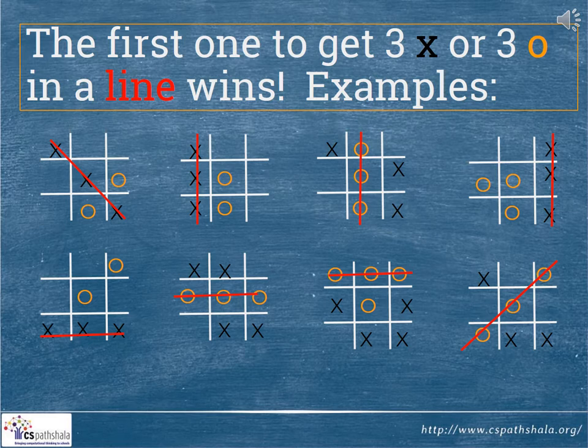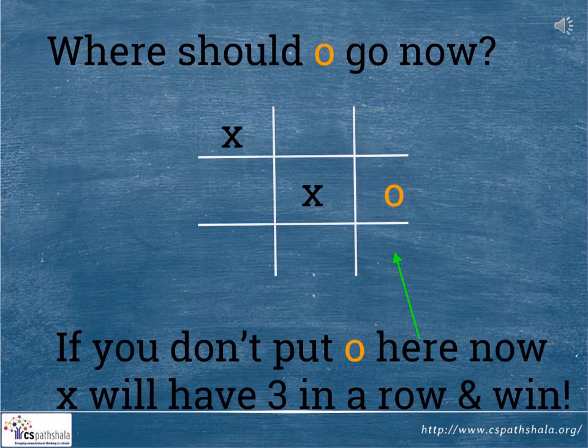Take a close look at the slide. The first one to get 3 crosses or 3 knots in a line wins — see the examples. Where should the knot go now? If you don't put the knot in the right bottom corner, 3 crosses will be in a row and crosses will win.